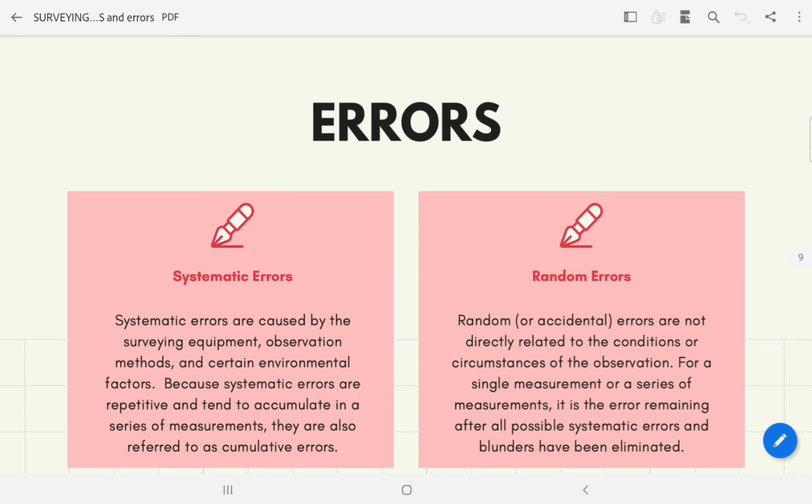On the other hand, random or accidental errors are not directly related to the conditions or circumstances of the observation. For a series of measurements, it is the error remaining after all possible systematic errors have been eliminated. As the name implies, random errors are unpredictable and are often caused by factors beyond the control of the surveyor. Their occurrence, magnitude, and direction cannot be predicted. Errors of this type are compensating and tend to at least partially cancel themselves mathematically. Because the magnitude is also a matter of chance, they will remain to some degree in every measurement.